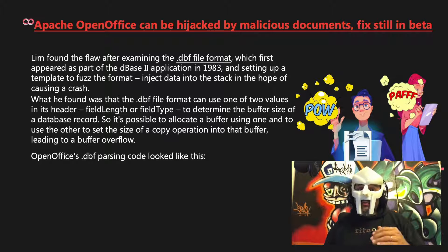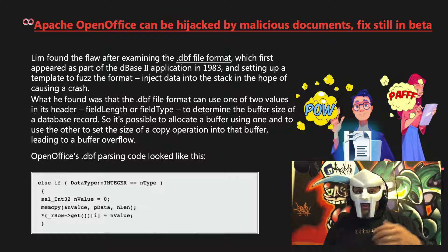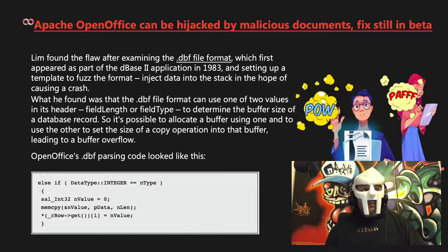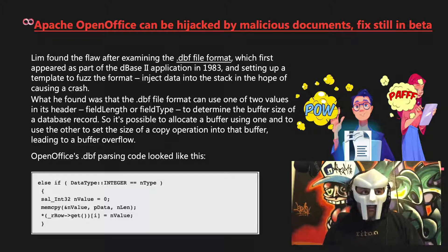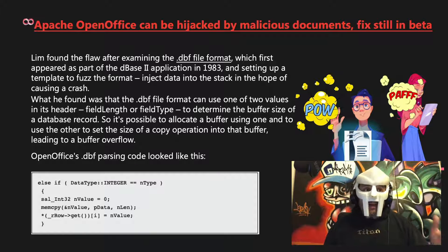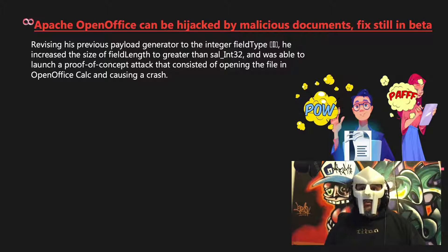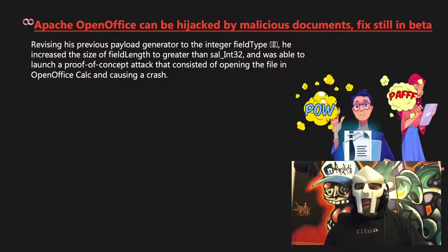OpenOffice's .dbf parsing code looked like this: else if data type integer equals ntype, sal_Int32 nValue equals 0, memcpy nValue pData nLength. In the screenshot, we can see a buffer nValue of size sal_Int32, which is four bytes, being instantiated for a field of type integer. Next, memcpy copies a buffer of size nLength — which is an attacker-controlled value — into nValue without validating that nLength is smaller than or equal to four bytes. Revising his previous payload generator to the integer field type, he increased the size of field length to greater than sal_Int32's four bytes, and was able to launch a proof-of-concept attack that consisted of opening the file in OpenOffice Calc and causing a crash.